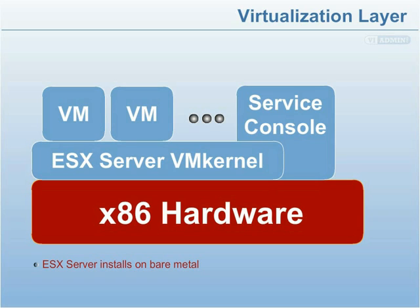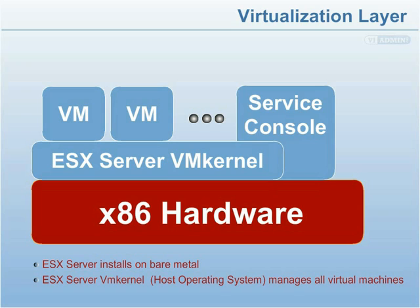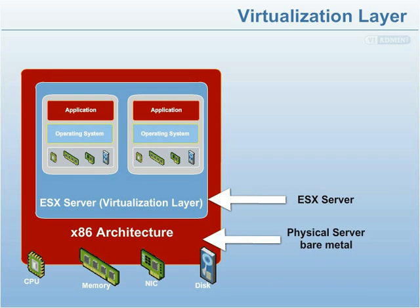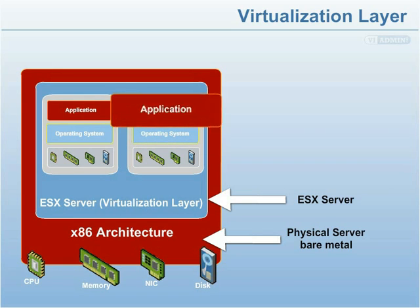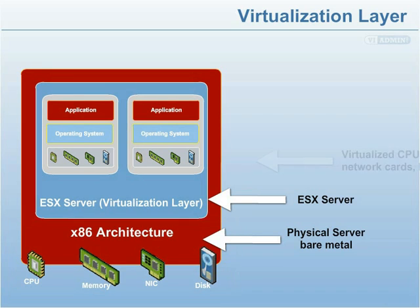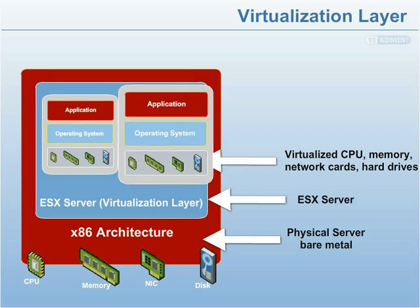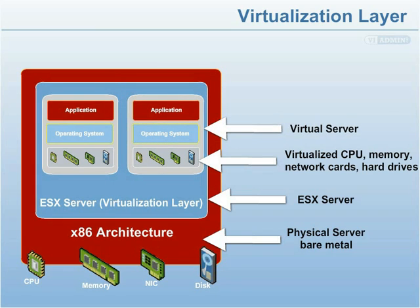The server virtualization layer, also known as the VM kernel, runs on the native hardware and manages all the operating systems on the physical machine. It is also known as the host or host operating system because it hosts the virtual machines running on a particular physical system. ESX Server installs on bare metal and separates operating systems and applications from hardware and firmware by presenting a virtualized CPU, memory, hard drives, and network cards to the operating system.